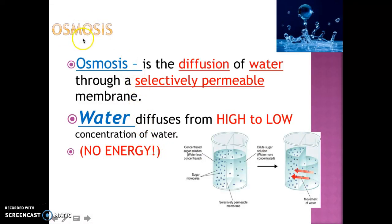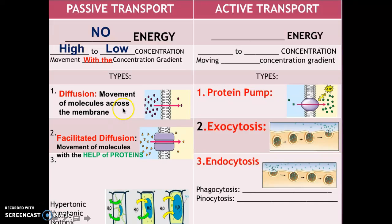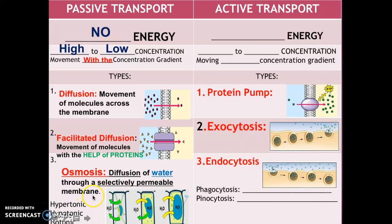The last type of passive transport is osmosis. Osmosis is the movement of water through a selectively permeable membrane. The difference with osmosis is that it only talks about the movement of water. Water always goes from an area of high concentration of water to an area of low concentration of water. It requires no energy, just like the other forms of passive transport.